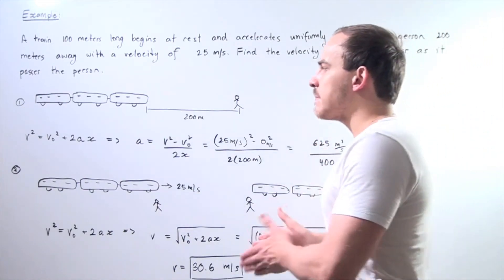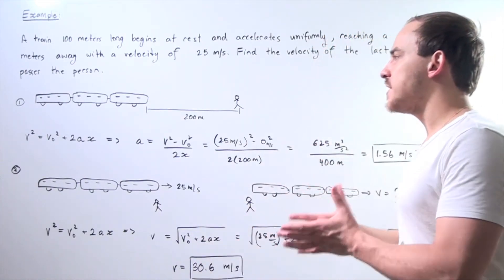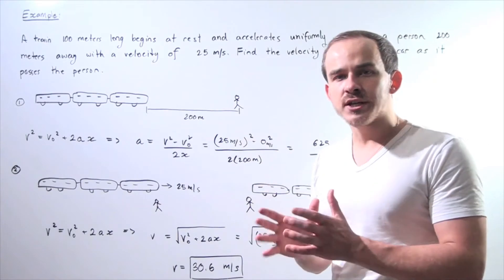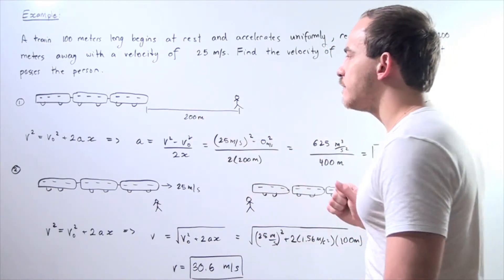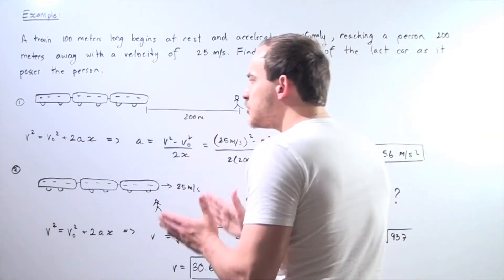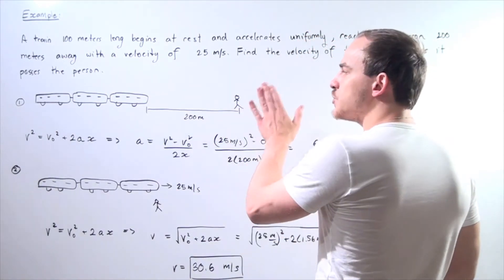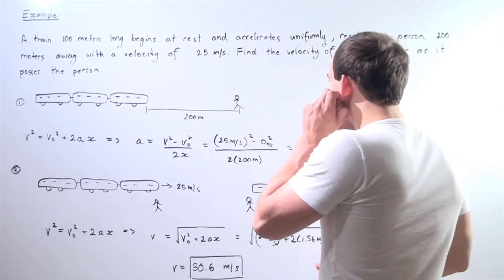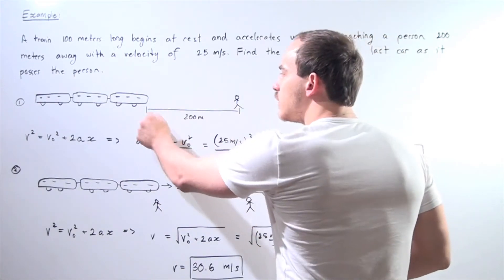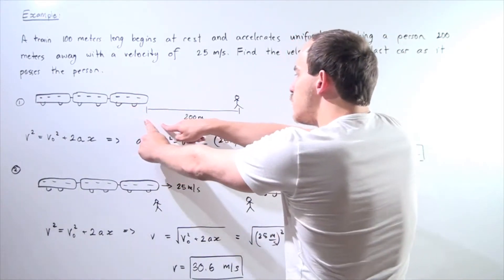So in the first step of the problem we have to figure out what acceleration is. So let's look at the following diagram. Initially our train is stationary and the person is also assumed to be stationary. Now the person and the front of the train is 200 meters away.